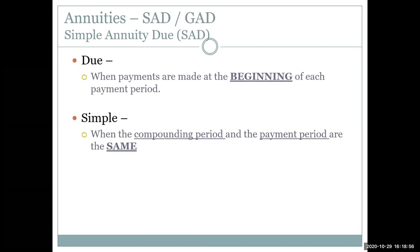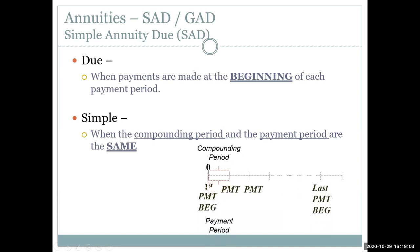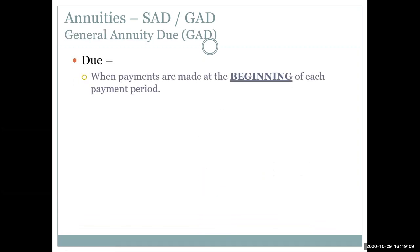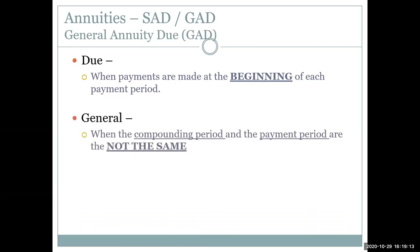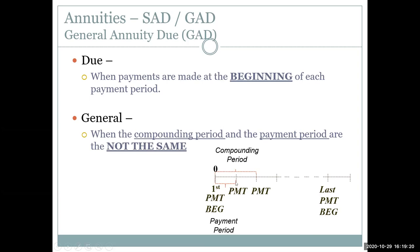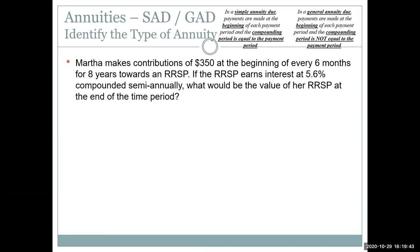To recap: for a due annuity, payments are at the beginning of each payment period. Simple means the payment period and compounding period are the same. For the general case, due means it's at the beginning of the payment period, and general means the compounding period and payment period are different — for example, paying monthly but compounding semi-annually or quarterly. We need to identify whether we have a due annuity, and whether it's a general annuity due or a simple annuity due. Let's take a look at some examples.